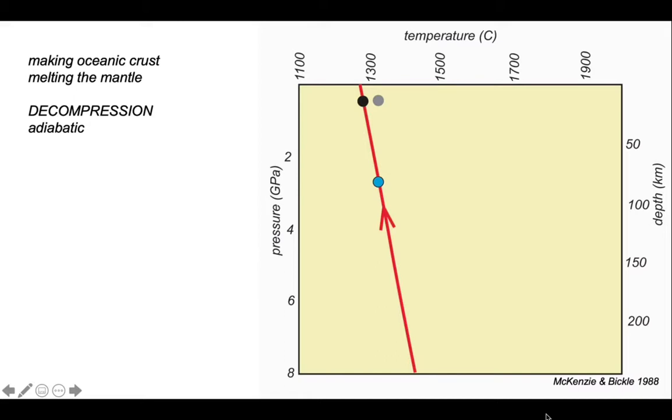This is called the mantle potential temperature. In this particular case our rock would end up at the earth's surface with a temperature of 1280 degrees. So that is the potential temperature of our imaginary sample.